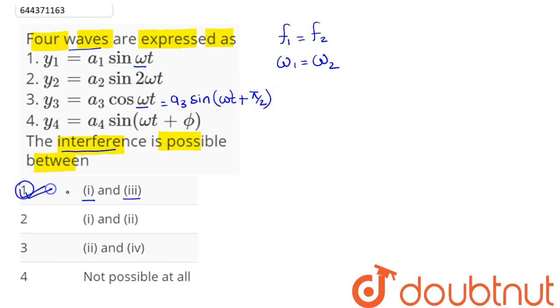Hence we can say here these two waves can interfere. So their superposition will also result in a wave equation.